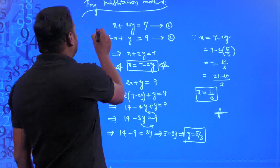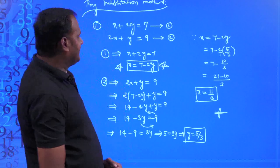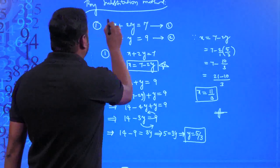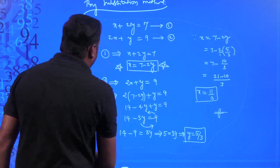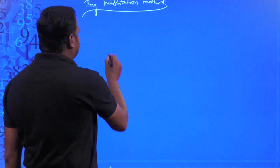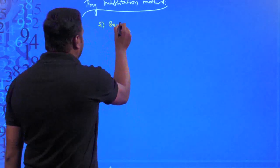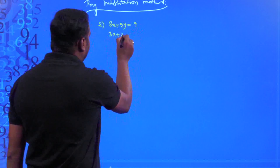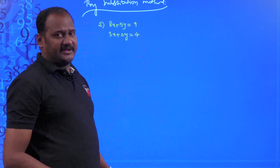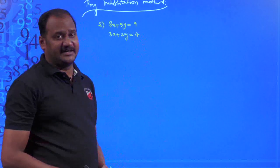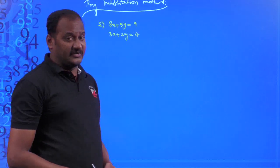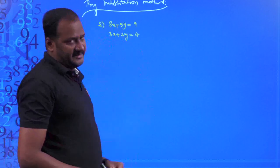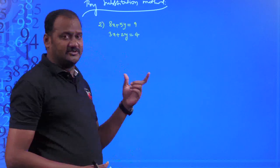I am taking one more example to explain by substitution method when a unique solution exists. The equations are 8x + 5y = 9 and 3x + 2y = 4. First, check whether a unique solution exists: a1/a2 = 8/3 and b1/b2 = 5/2. Since 8/3 ≠ 5/2, a unique solution exists.